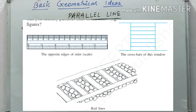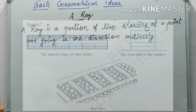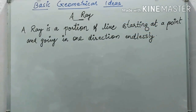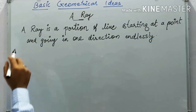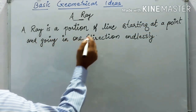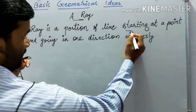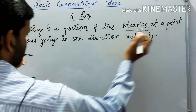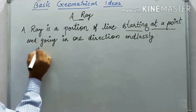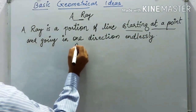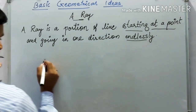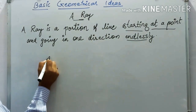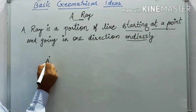Three examples of parallel lines are: opposite edges of a ruler, the crossbar on a window, and railway lines. The next topic is a ray. A ray is a part of a line that starts at a point and goes in one direction indefinitely.